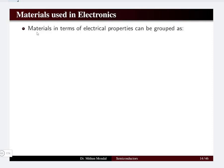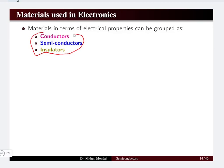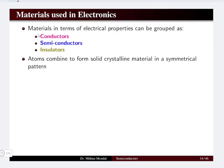Generally the materials can be grouped into three important types: first is the conductors, second semiconductors, and third is the insulators. In this particular lecture we are going to see what is the basic difference between these materials in terms of their electrical properties. We discussed atoms and we know that when atoms combine they form a solid crystalline material, which has a symmetrical pattern.